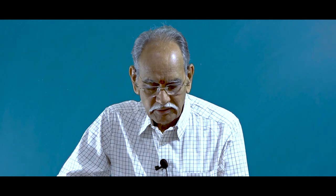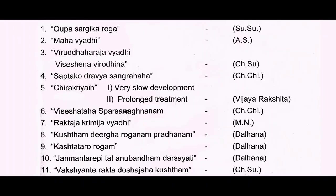Janmaantarapi tat anuhovam darsayati — this quotation by Ashtanga Sangraha says that this particular disease causes suffering for so many years, even for Janmaantarapi. Vakshanti Rakta dosha jaha — this Rakta dosha makes your body totally destructive by its continuous affection. This is said to be a Sparishyavatam in Rasa Samachayam — a very good nomenclature coined for the disease Kusta.